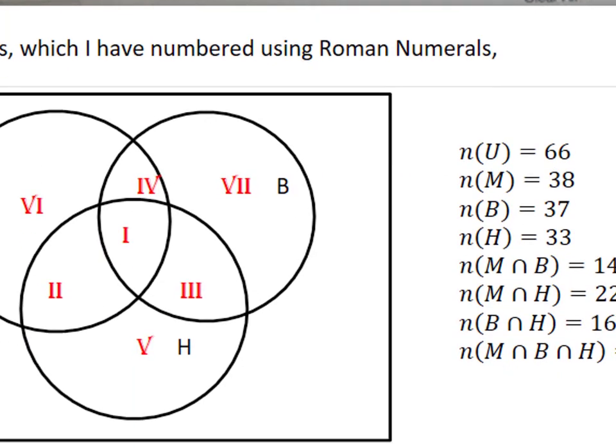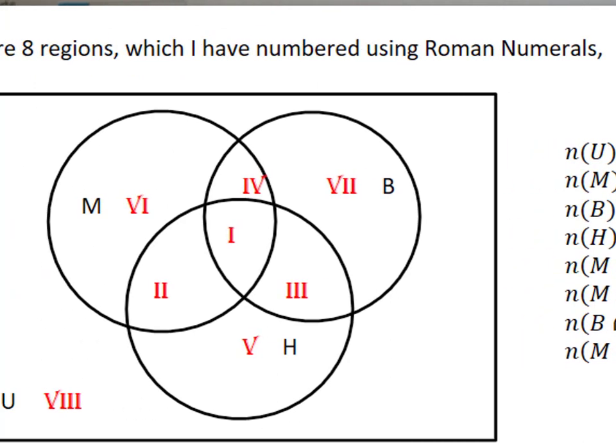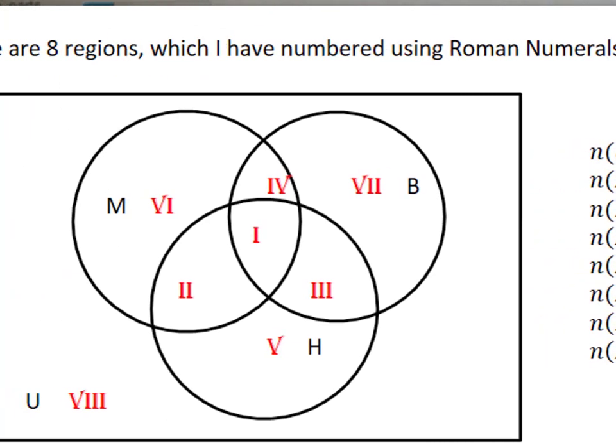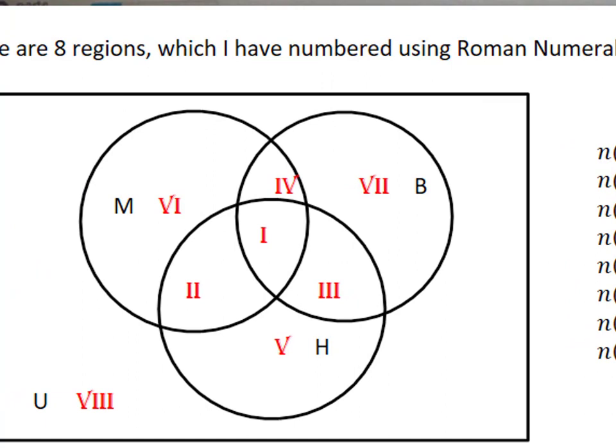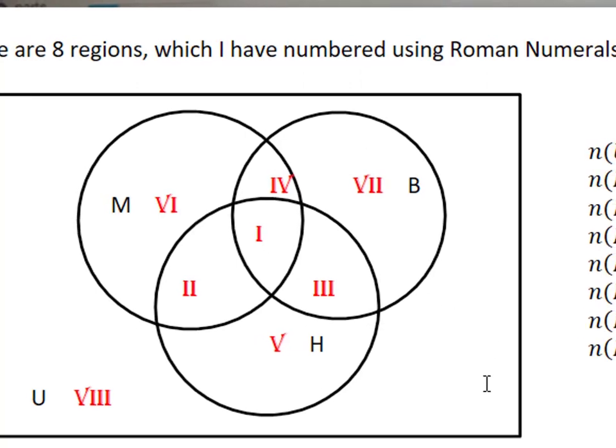So I've created a Venn diagram that looks like the one you're supposed to fill in in my math lab. Whenever you have a three-set Venn diagram, it's going to divide the universal set U, the rectangle, into eight regions. So I've numbered them using Roman numerals one through eight.